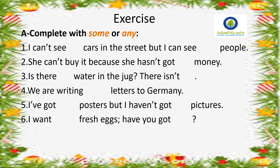Now in this exercise, you will complete with some or any. Number one: I can't see any cars in the street, but I can see some people. The first part — I can't see — is a negative sentence, so the answer is any. The second part — I can see — is affirmative, so the answer is some. Can't equals negative; can equals affirmative. It's easy.